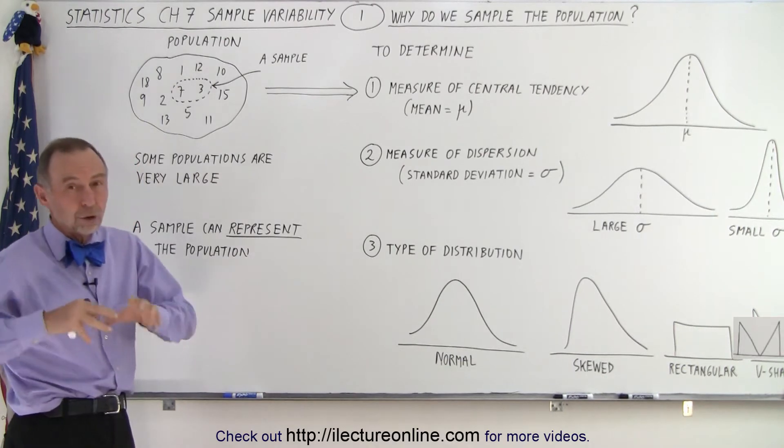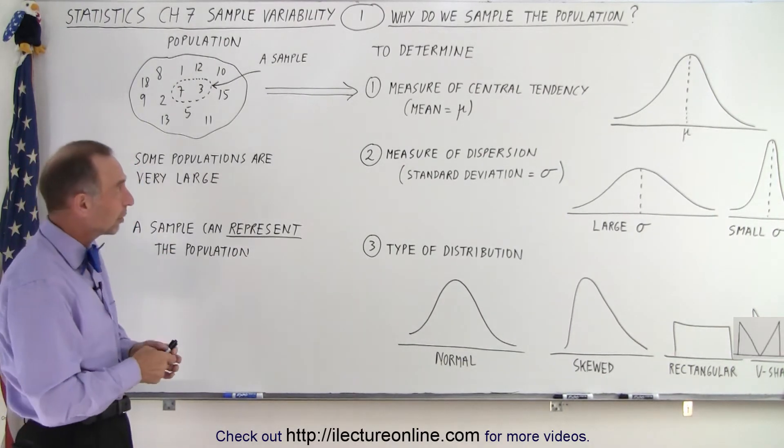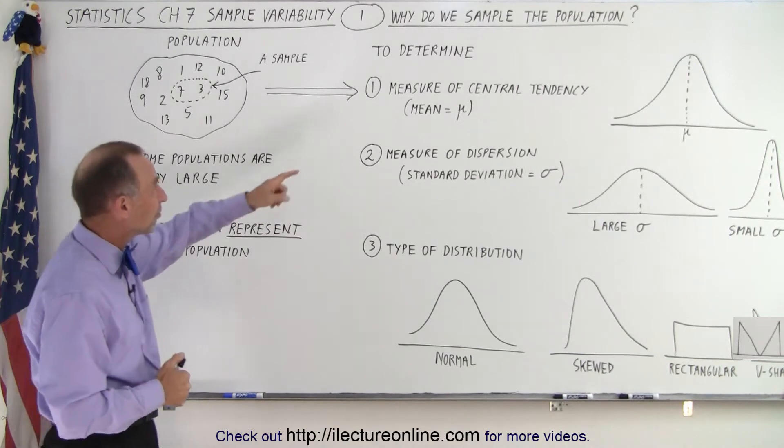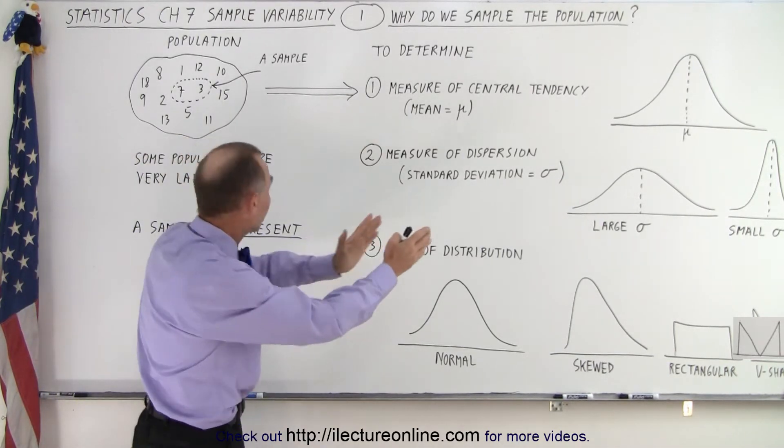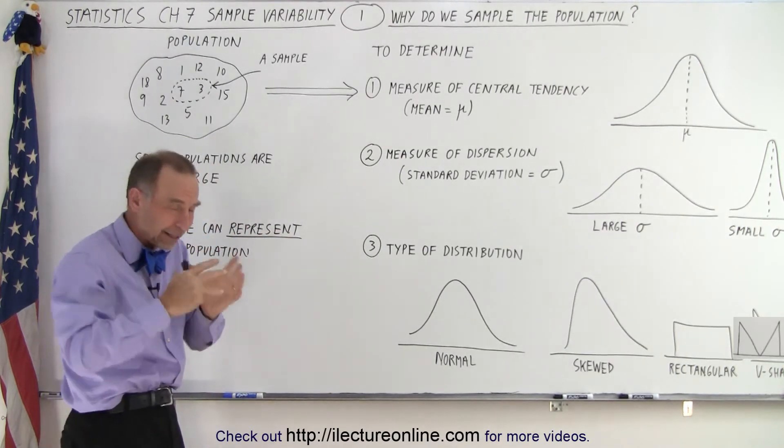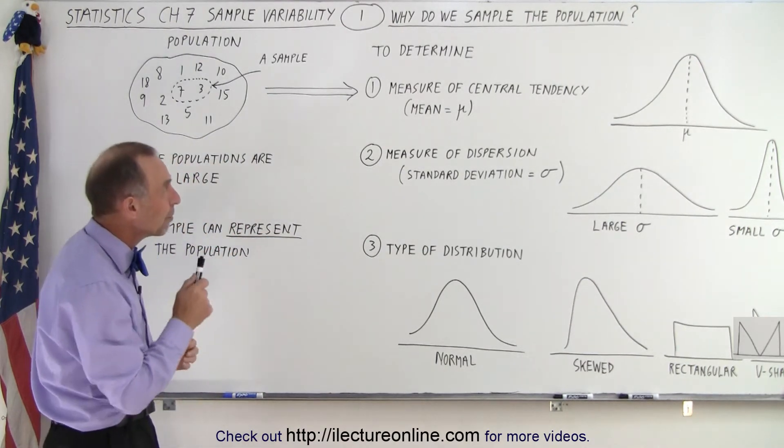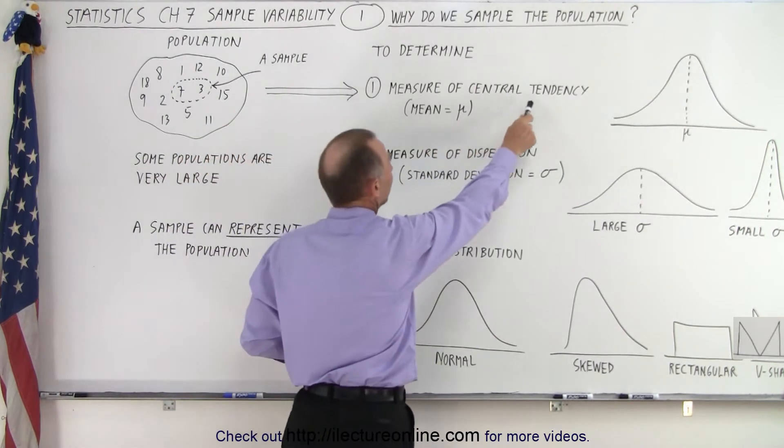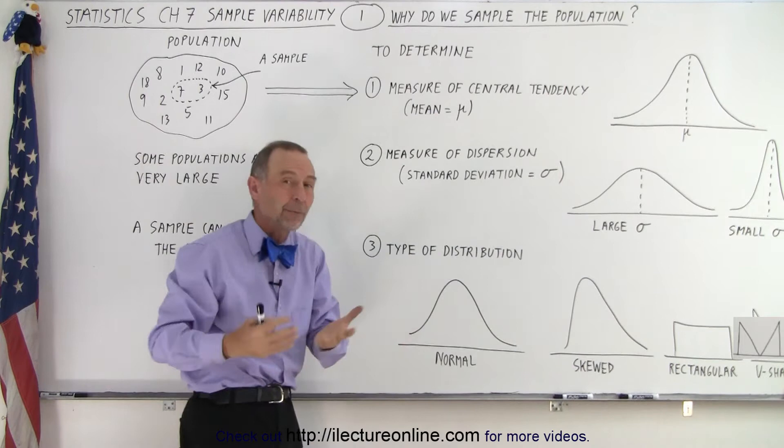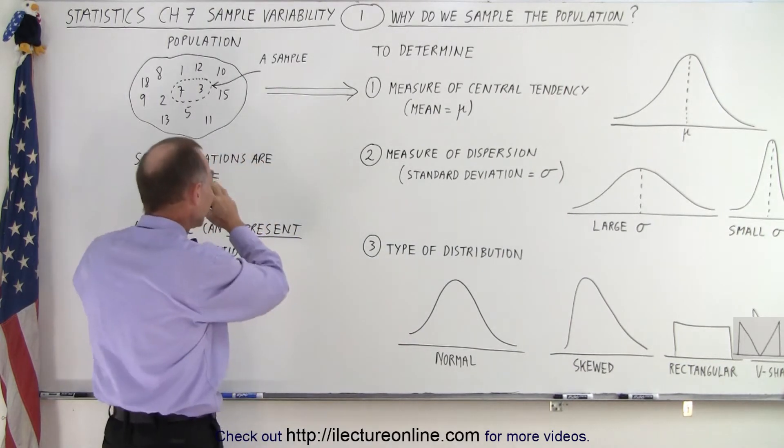What are some of the things we want to do with the sample information? Well, there's typically three things we want to do. We want to find, and this of course references the total population by manipulating and calculating and dealing with the sample. We want to measure the central tendency of the population. In other words, we want to find the mean of the population by using the sample.